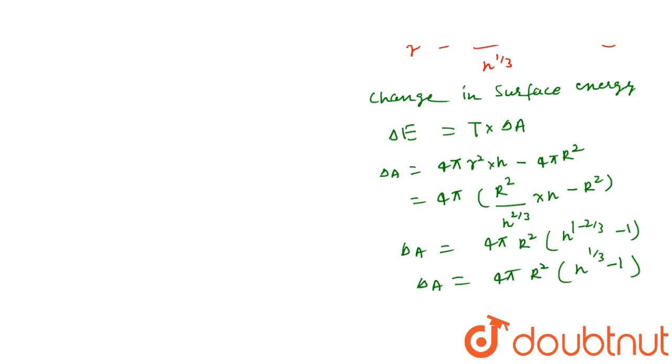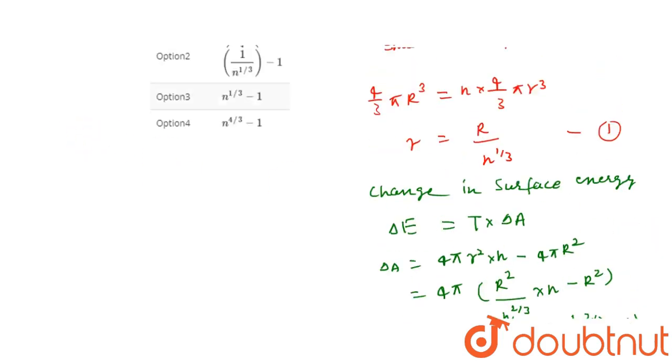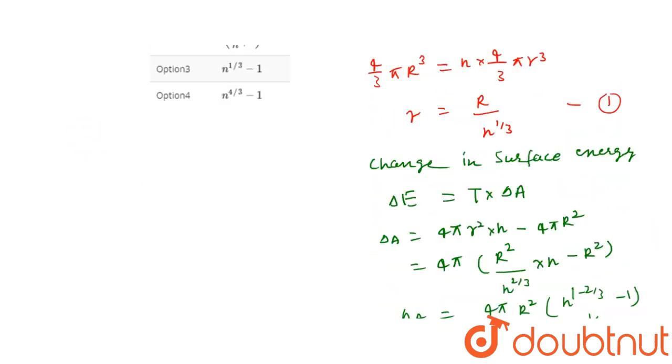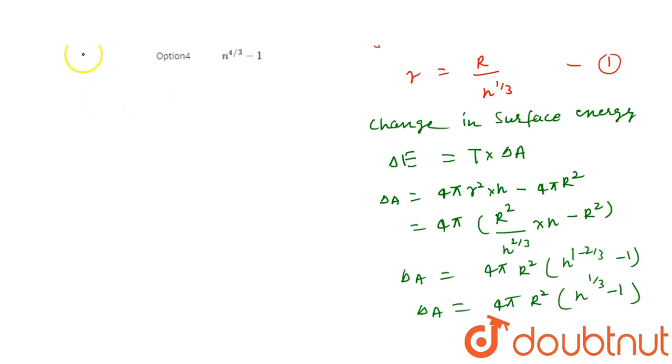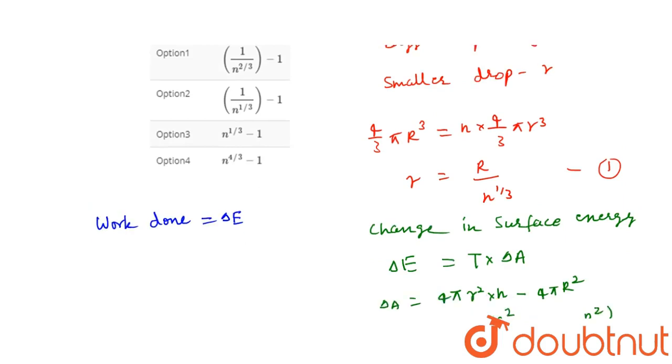Now work done, we know that work done needs to be found. The work done will be stored in the form of surface energy. So work done will equal delta E. Whatever surface energy changes, that much work is done.